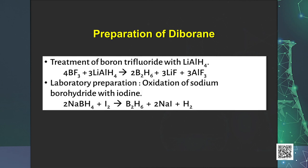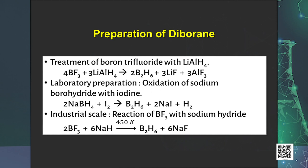Laboratory preparation of diborane is done by the oxidation of sodium borohydride with iodine: 2NaBH₄ + I₂ → B₂H₆ + 2NaI + H₂. Industrial scale synthesis involves the reaction of BF₃ with sodium hydride: 2BF₃ + 6NaH → B₂H₆ + 6NaF.